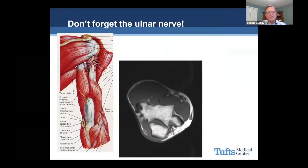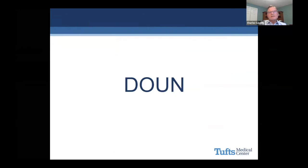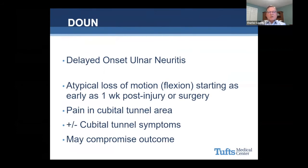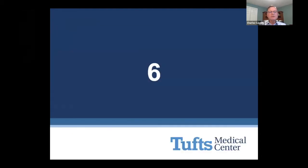Number five: don't forget the ulnar nerve. The ulnar nerve is in close proximity to the elbow joint — in fact, the posterior band of the medial collateral ligament is the floor of the cubital tunnel, making it susceptible to injury and scarring. There's a condition called DOUN — delayed onset ulnar neuritis — which can derail your rehab. It's atypical loss of motion, usually in flexion, starting as early as a week post injury or surgery. Patients may report pain in the cubital tunnel area without necessarily reporting numbness and tingling. If you're a therapist and you pick that up, definitely communicate it to the treating surgeon because it may need to be addressed surgically quickly.